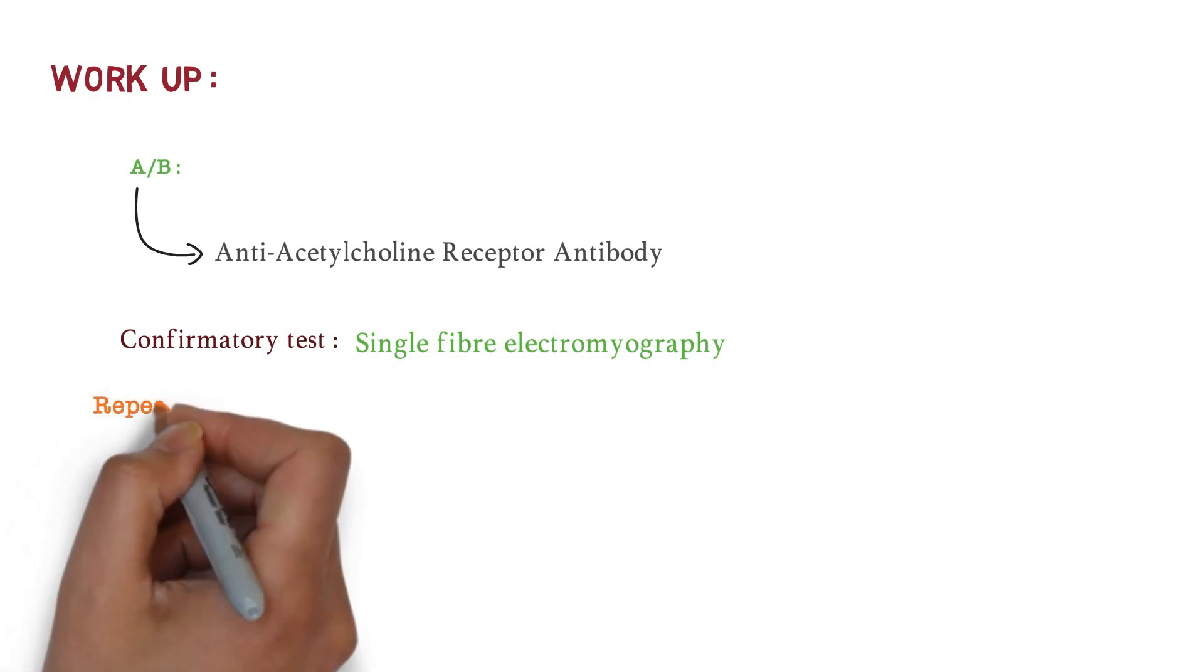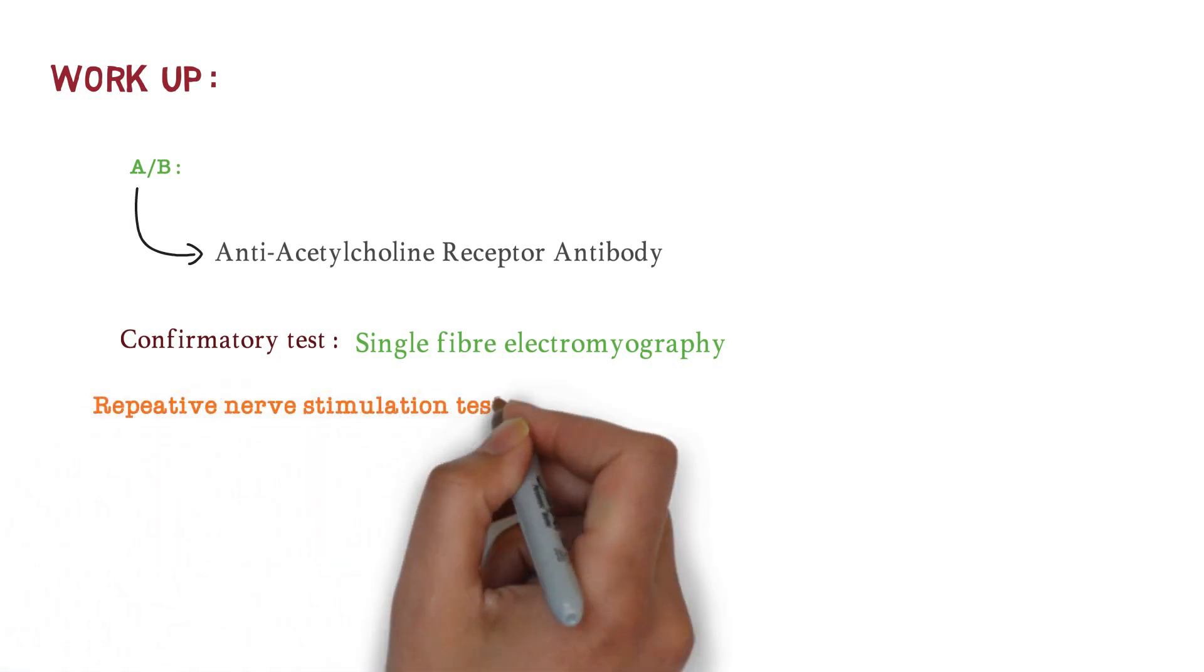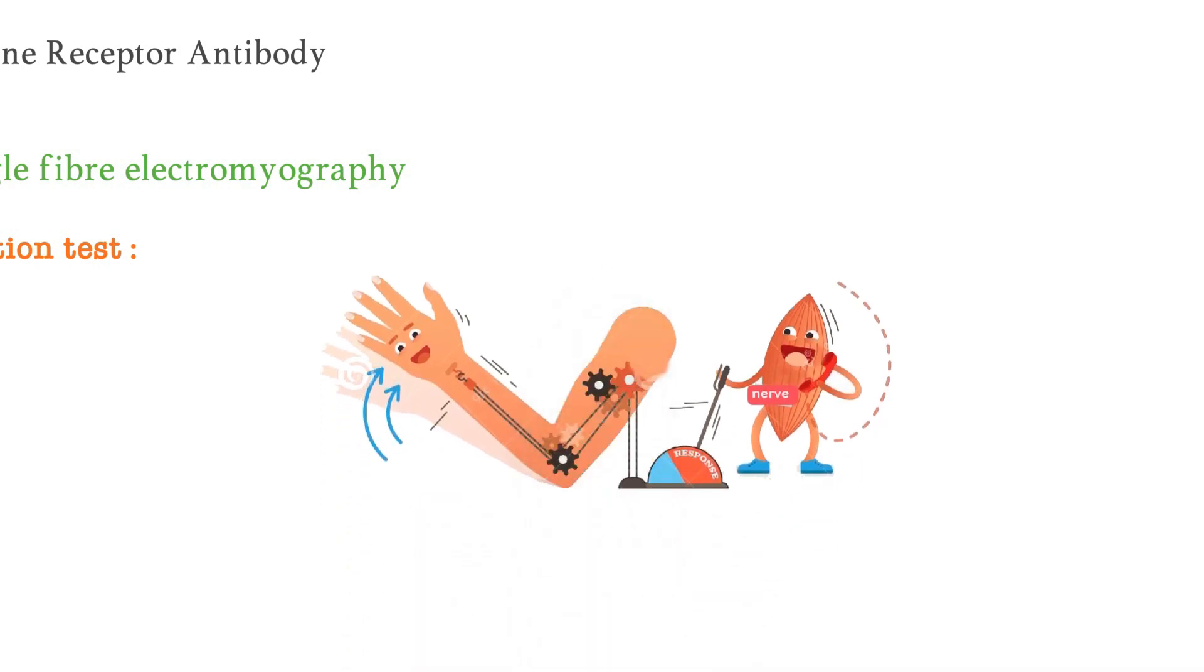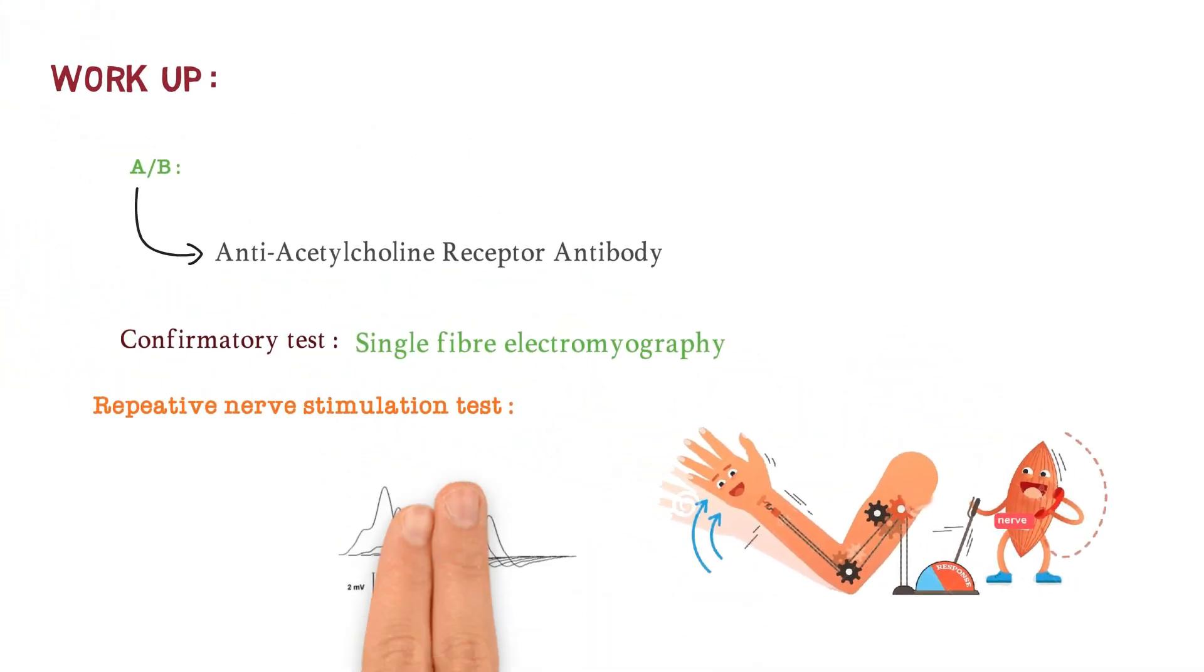There is also repetitive nerve stimulation test. When we give repetitive nerve stimulation to any muscle, there is a decremental response. You can see here the amplitude of the action potential gradually decreases.